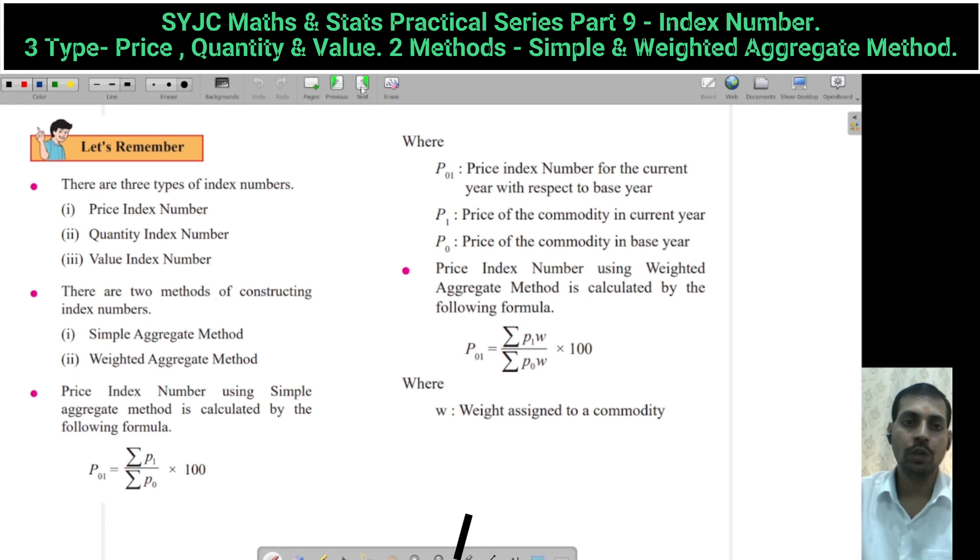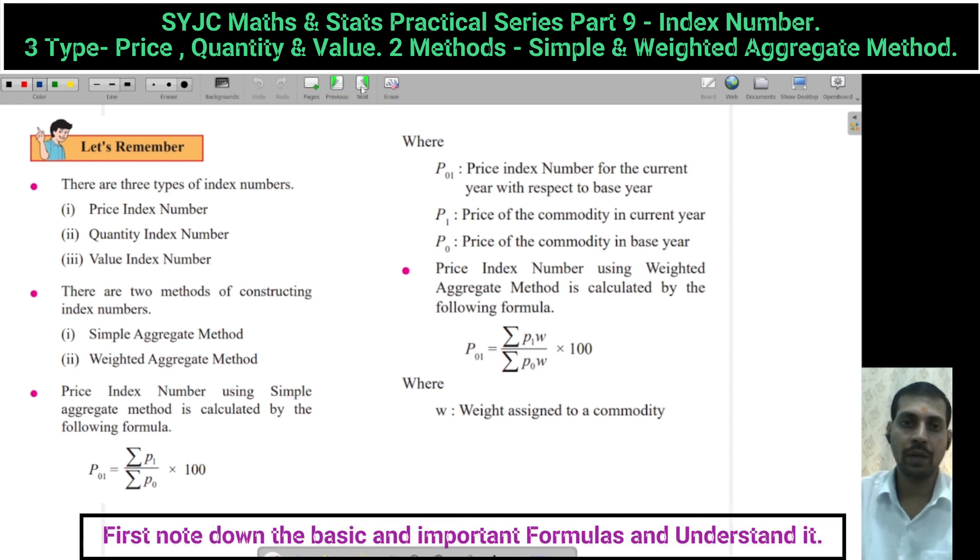Before starting Index Number, we have a list of formulas that we will revise. There are three types of Index Numbers: Price Index Number, Quantity Index Number, and Value Index Number. There are two methods to construct Index Numbers: Simple Aggregate Method and Weighted Aggregate Method.